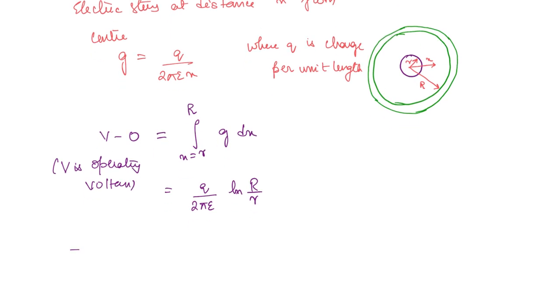Now, from here you can find out the capacitance. Capacitance is the ratio between the charge and the voltage. So this is going to be q by V, which equals 2πε by ln(R/r).